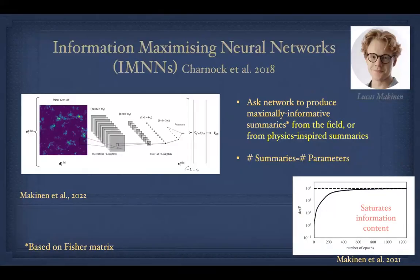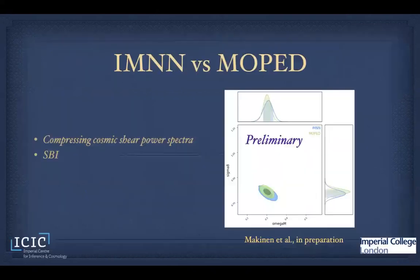The other approach is to use neural networks to define informative summary statistics. My student Lucas Makinen is one of the experts in this. You simply ask the neural network: given the entire shear map of the universe, which six combinations of pixel values are the most informative? Neural networks are good at optimizing such things, and we find it works quite nicely.